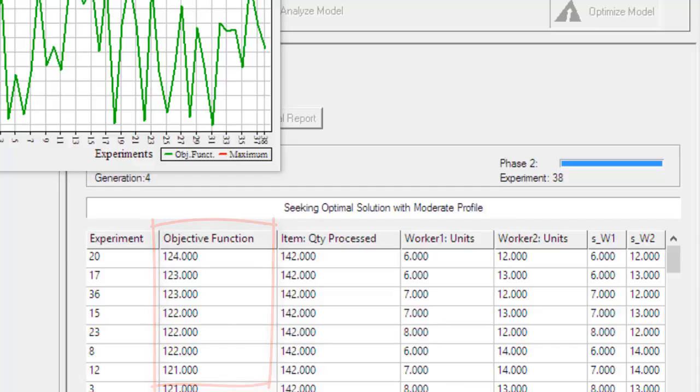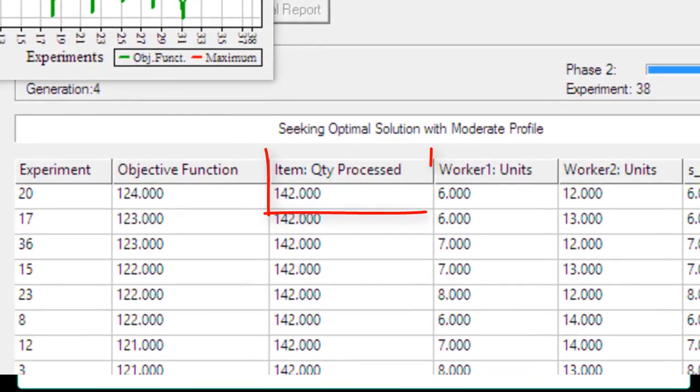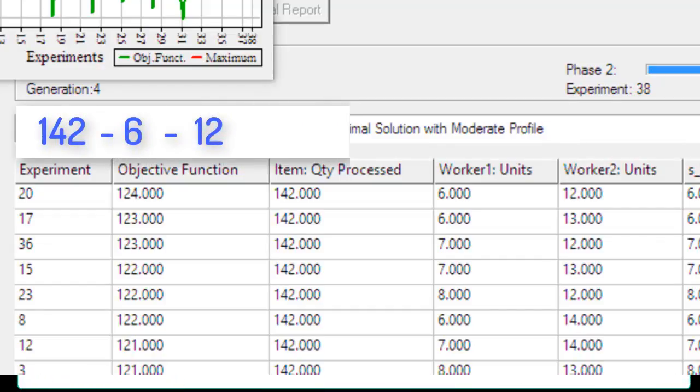The final winning experiment produced 142 entities and required six worker ones and twelve worker twos. 142 minus 6 minus 12 gives an objective function of 124. Not many of the formulas will be this easy, but they work in the same manner.